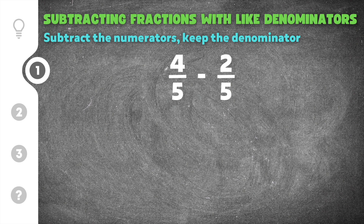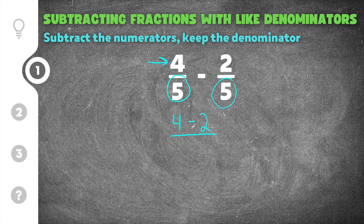Here we are in our first problem. This problem gives us 4 fifths minus 2 fifths. We already know that we're going to subtract the numerators from each other. So we're going to take this 4 and subtract it by the 2, because those are our two numerators. And then the denominator is going to remain the same — our denominator is 5, so it will remain a 5.